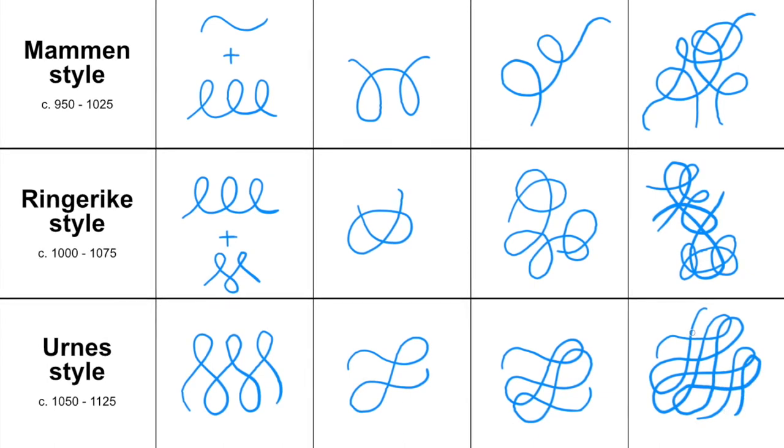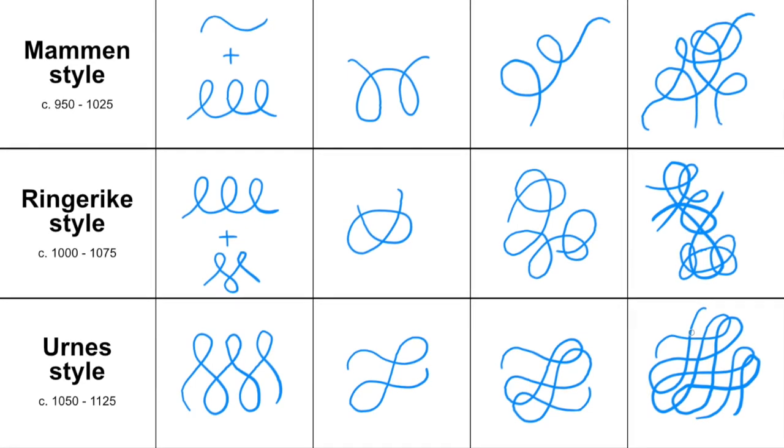So there you have it. These are the core concepts of how the ribbons are used in the three late Viking Age styles. If you have any questions let me know in the comments below and I'll see you in the next video.